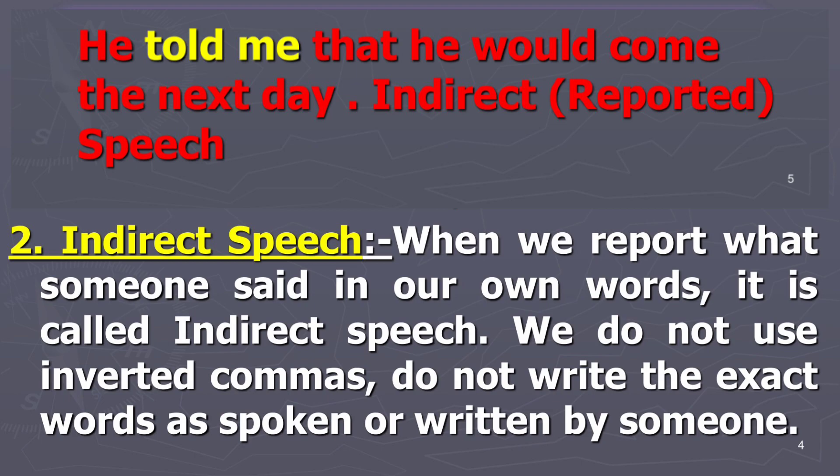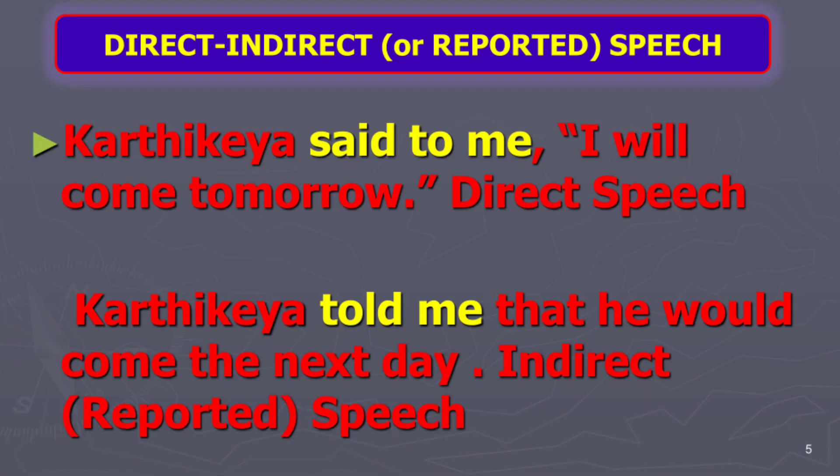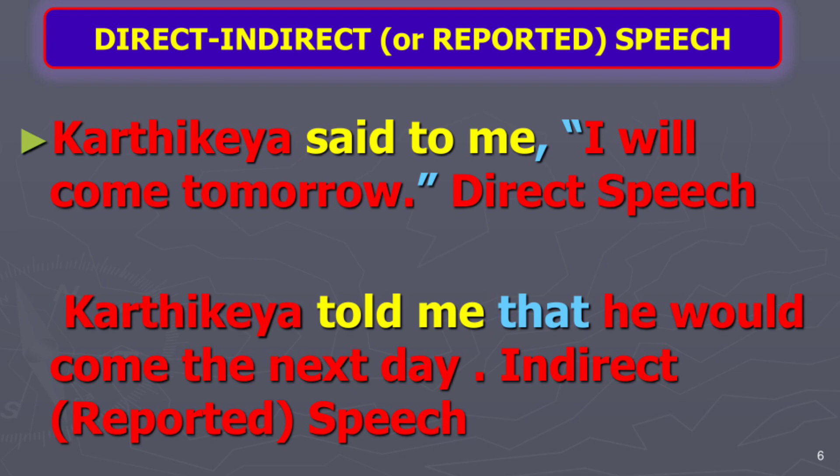Let us see the changes that happen from direct speech to indirect speech. In the first sentence, we see 'said to me.' In indirect speech, we get 'told me.' This is the first change. Second, in direct speech there is a comma and inverted quotation. Instead of that, in indirect speech we add 'that.'